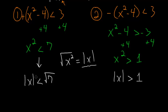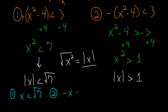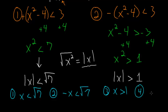Since we have an absolute value again, we can split each into two separate cases. For Case 1, the positive x is less than the square root of 7, and the negative x is less than the square root of 7. For Cases 3 and 4, positive x is greater than 1, and negative x is greater than 1.